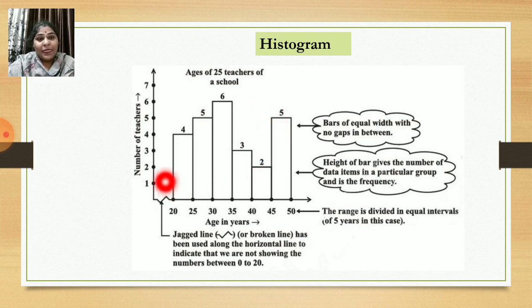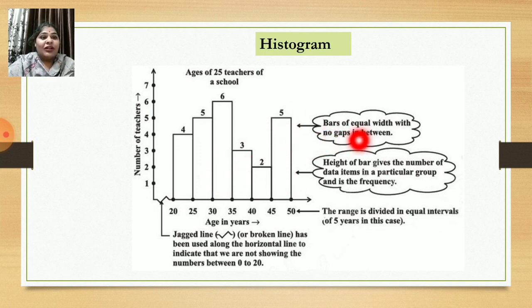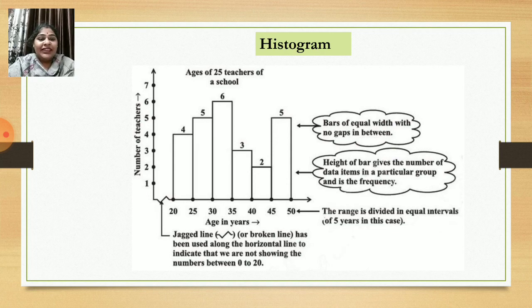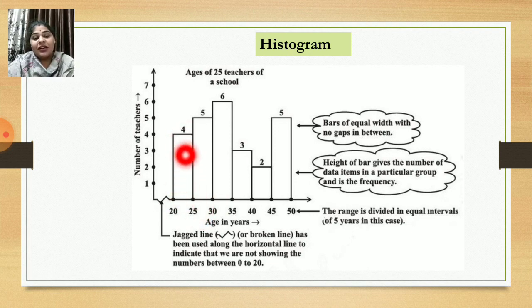In a histogram, the height of the bar gives the number of data items in a particular group, that is, the frequency. Bars should be of equal width and there should be no gap between the bars. In this example, age in years is given on the x-axis and number of teachers on the y-axis. The histogram shows how many teachers fall in each age group — for example, there are 4 teachers aged 20 to 25, and 5 teachers aged 25 to 30.